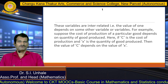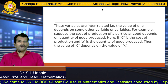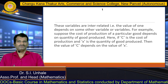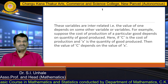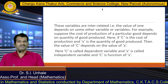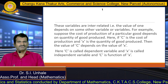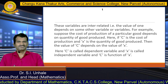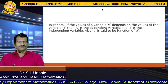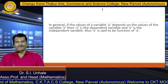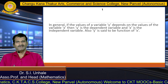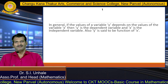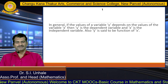For example, suppose the cost of production of particular goods depends on the quantity of goods produced. Here, c is the cost of production and x is the quantity of goods produced. Then the value of c depends on the value of x. So here we say that c is called the dependent variable and x is called the independent variable, and c is a function of x. In general, in mathematics, if the value of variable y depends on the value of some other variable x, then y is called the dependent variable, x is called the independent variable, and y is said to be a function of x.